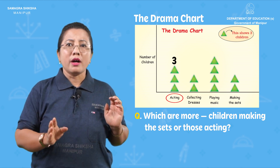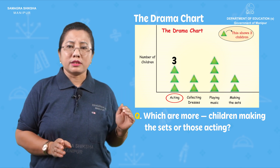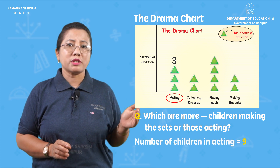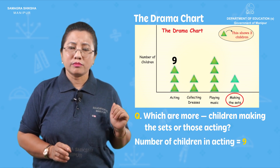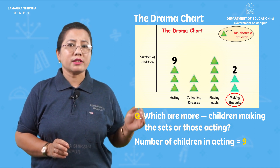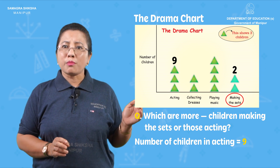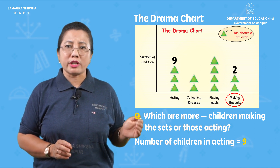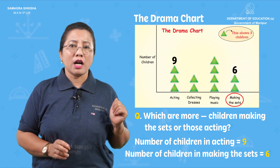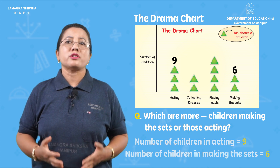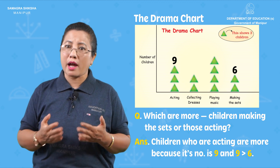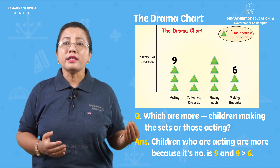There are three triangles for acting. Three triangles means the number of children is nine. For making the set, there are only two triangles. The total number of children involved in making the set is three into two, that is six. So children who are acting are more, because nine is greater than six.